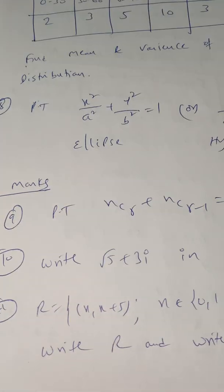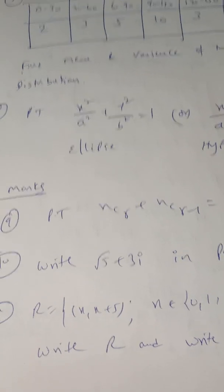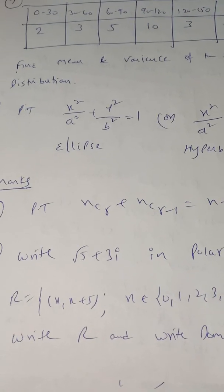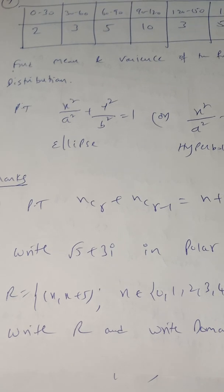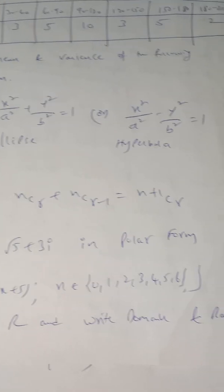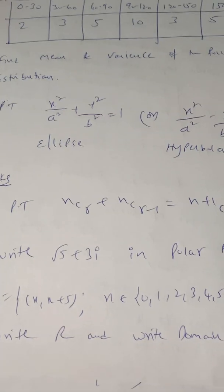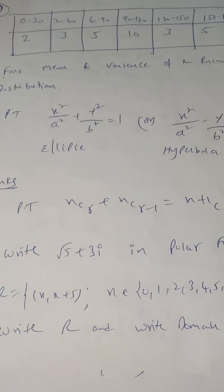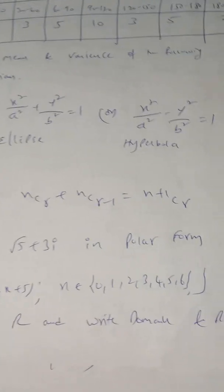In relations and functions, a question on finding a relation and its domain and range may be asked. For example, R = {(x, x+5) : x ∈ {0, 1, 2, 3, 4, 5, 6}} — write R and find the domain and range. Or they may ask R = {(x, x³) : x is an even prime number}. Out of these two questions, one will appear for 3 marks in the first PUC final examination.